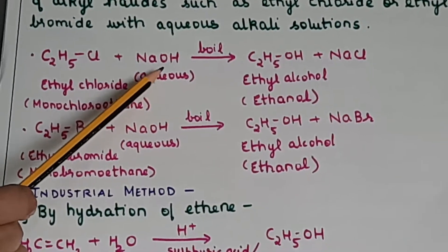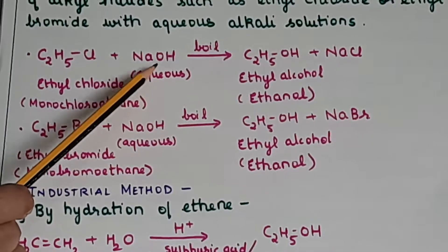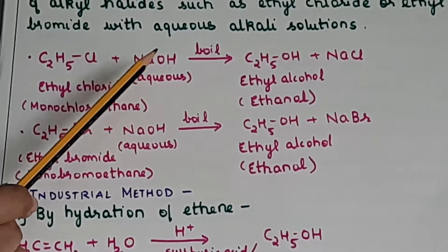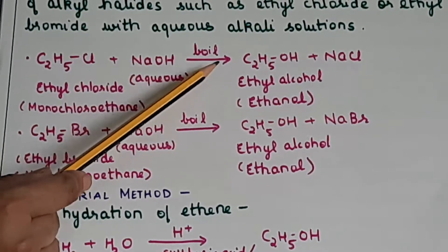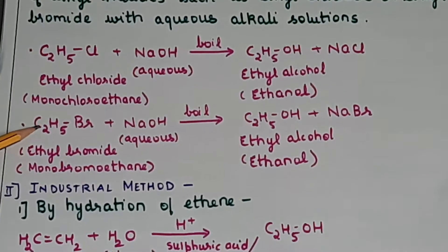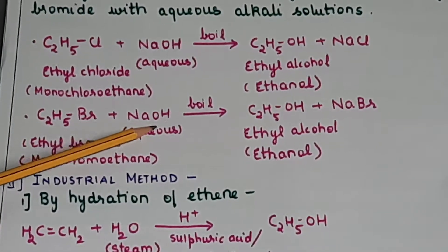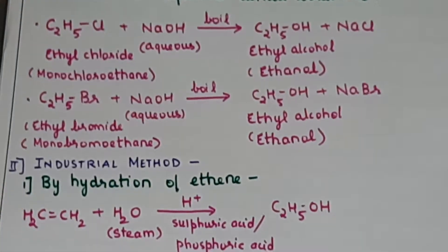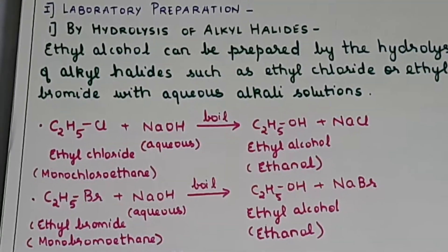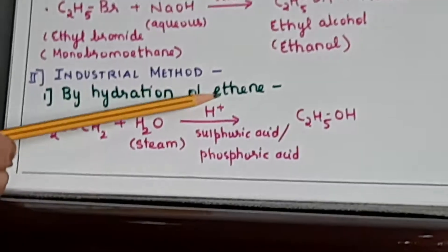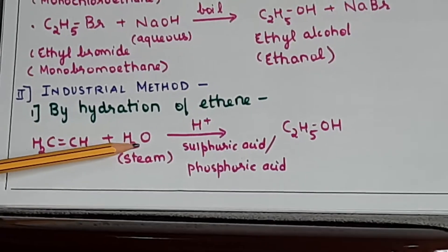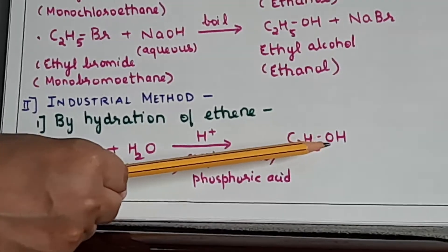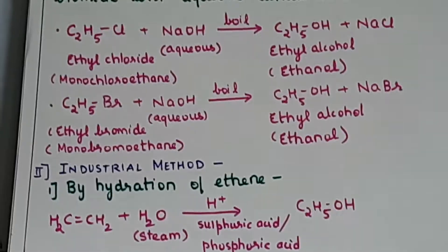This aqueous condition is very important — in alkenes and alkynes we used alcoholic alkali solution, but here it is aqueous NaOH and boil. Similarly, ethyl bromide plus aqueous NaOH gives C2H5OH plus NaBr — ethyl alcohol. This is the laboratory preparation. There is also an industrial method: hydration of ethene. Ethene undergoes reaction with water (hydrolysis) to form ethyl alcohol C2H5OH. So these are the two methods for preparation of alcohol.